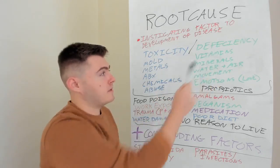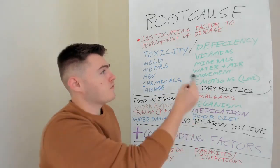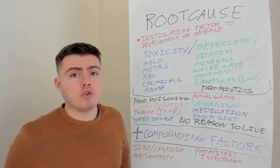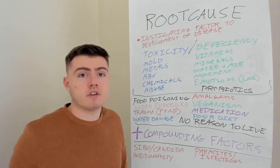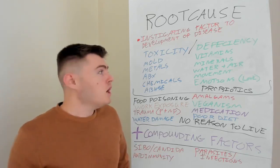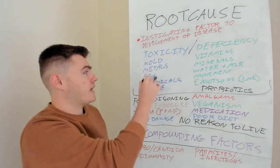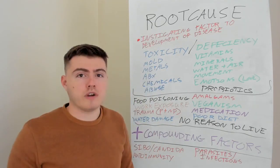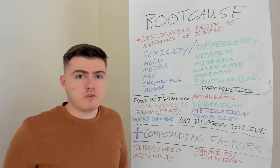On the deficiency side, we've got the obvious ones — vitamins and minerals. But we've also got water and air. If you're not getting enough good quality air, that's a huge factor. If the water you're drinking isn't good — for example, tap water — you're not only not getting good quality water, you're also getting toxicity: chlorine, fluoride, and recycled pharmaceuticals.